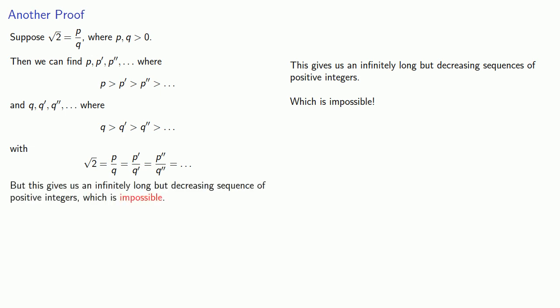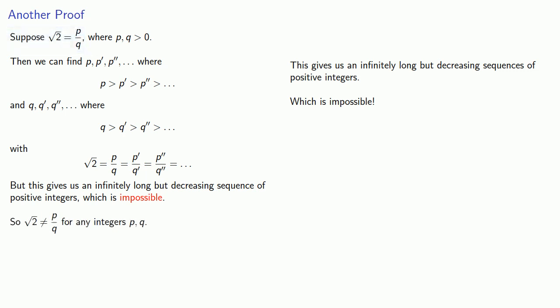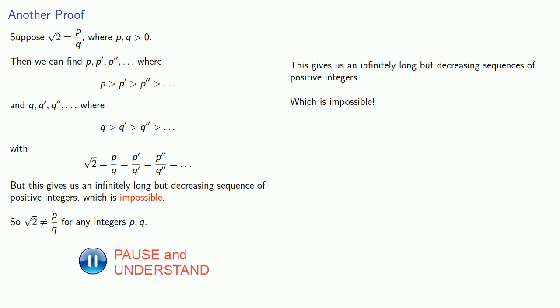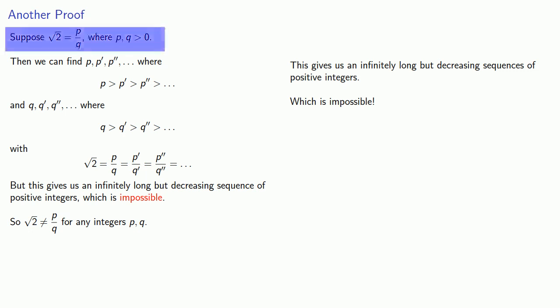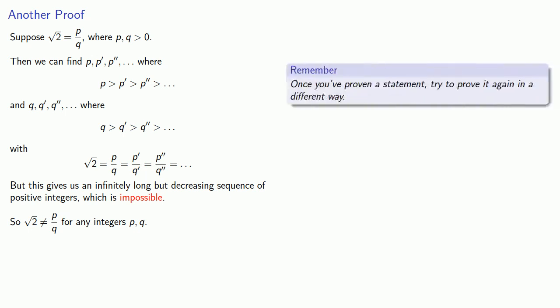And again, this means we got on the wrong bus. So the square root of 2 cannot equal p divided by q for any integers p and q. There's still a way out we haven't closed off, and we'll leave that last possibility as an exercise for the reader — because once you've proven a statement, try to prove it again in a different way.